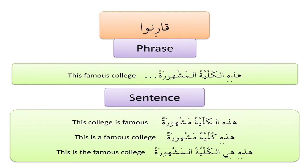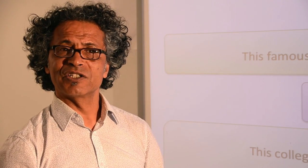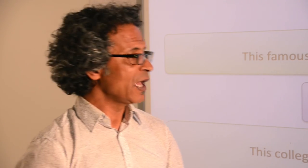Now, in these cases, when you say هَذِهِ الْكُلِّيَّةُ مَشْهُورَةٌ — when you have an الـ on the noun following a demonstrative — it's called بَدَل, meaning it's an apposition. So هَذِهِ and الْكُلِّيَّةُ could be acting the same. You could say هَذِهِ مَشْهُورَةٌ if you're pointing to the college itself, and it would still be understood. Or you could take هَذِهِ and say الْكُلِّيَّةُ مَشْهُورَةٌ and the sentence would stand. This is called بَدَل.